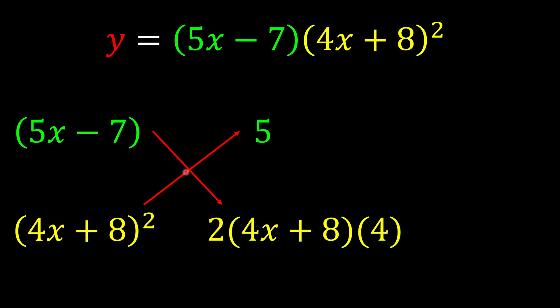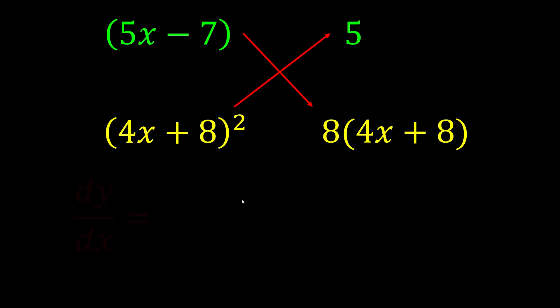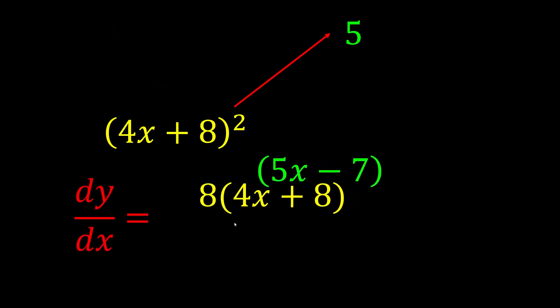We're going to times them together. But before this, we're going to simplify first. 2 times 4, we know we get 8. And we are good to go. Now we can just write it down as dy/dx is equivalent to the first couple times together, plus with the second couple.